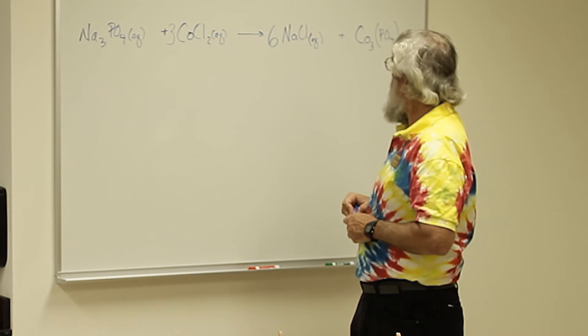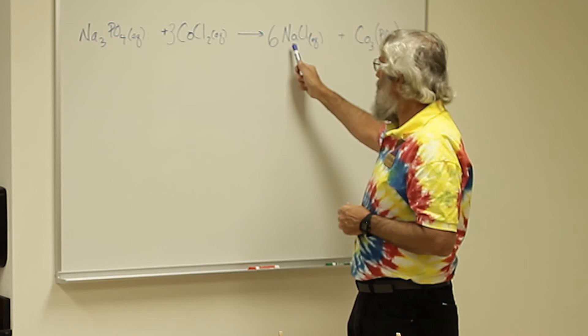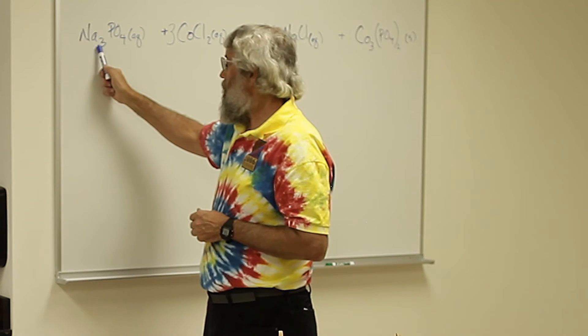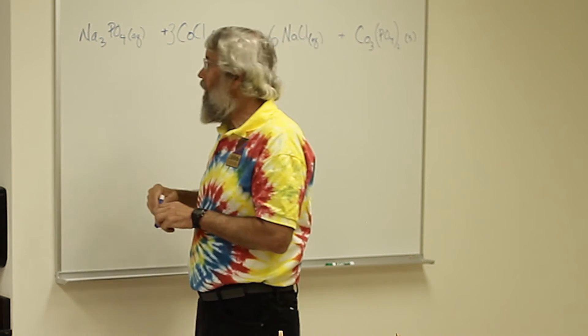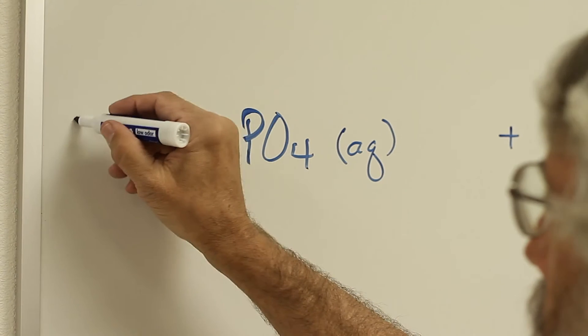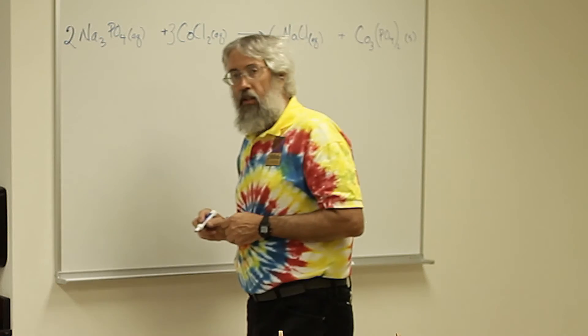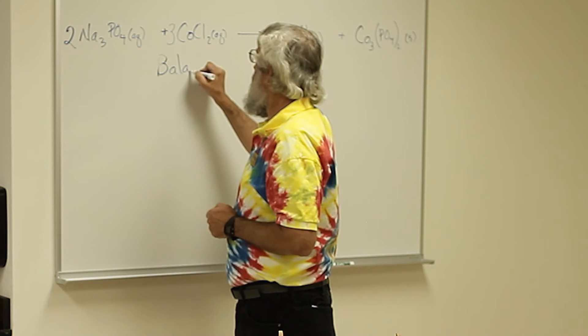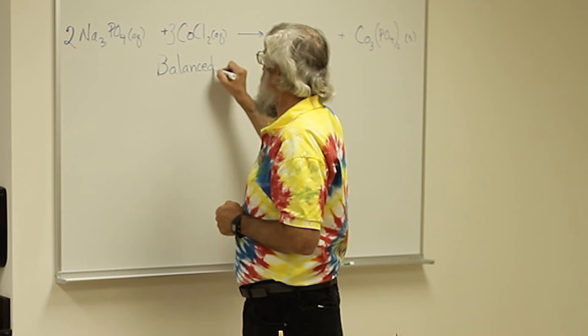And now if we look at the sodium, there are six sodiums on this side but only three on this side. So we need two over here. Now this is a balanced equation.